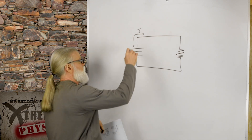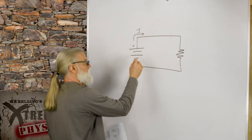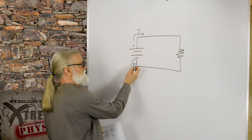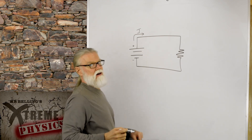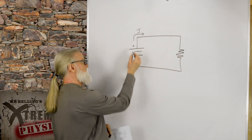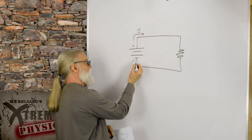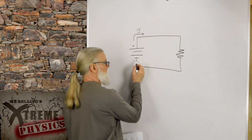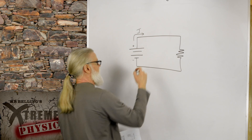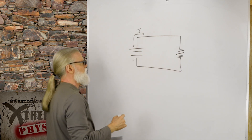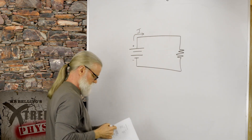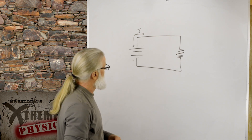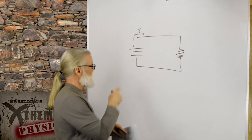Positive charges of course don't actually move, but current is defined as the direction positive charges would move. What's really happening is the negative charges are repelling each other — they're all clumped up here — so they go around the other way. The electrons go that direction, but we're going to think about positive charges moving.